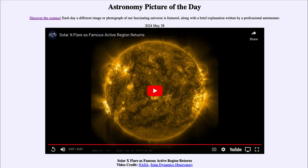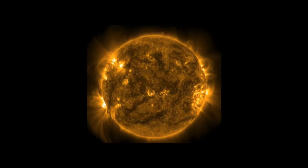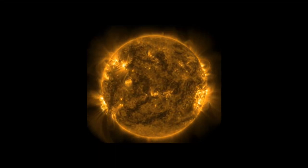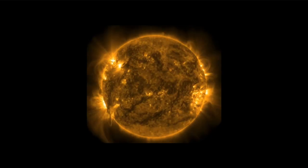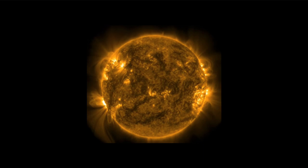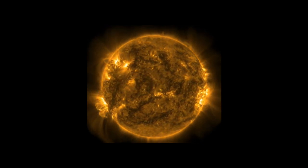So what do we see here? Well, this is a video clip and we'll take a look at it and put it on repeat so you can see it cycle through as we discuss it. This is actually showing the return of the famous active region on the sun known as AR 3664.